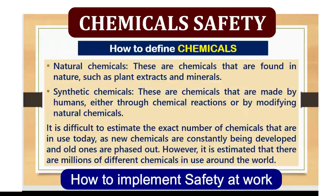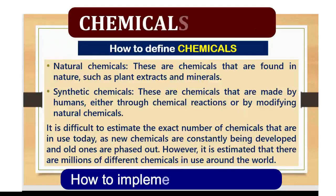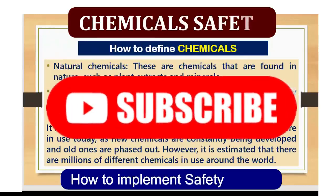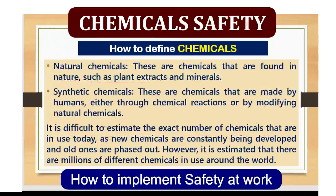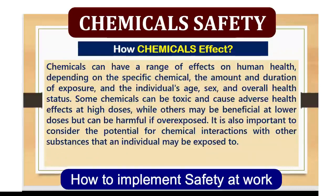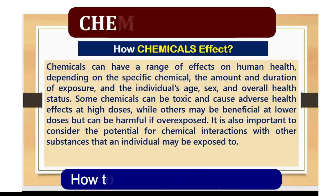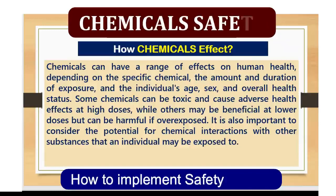It is difficult to estimate the exact number of chemicals in use today, as new chemicals are constantly being developed and old ones are phased out. However, it is estimated that there are millions of different chemicals in use around the globe. Today, we are discussing chemical safety: what chemicals are, how many types exist, how chemicals affect the human body and health, and how to control chemicals to prevent workers from harm, injuries, diseases, or health effects. So, let's dive in.